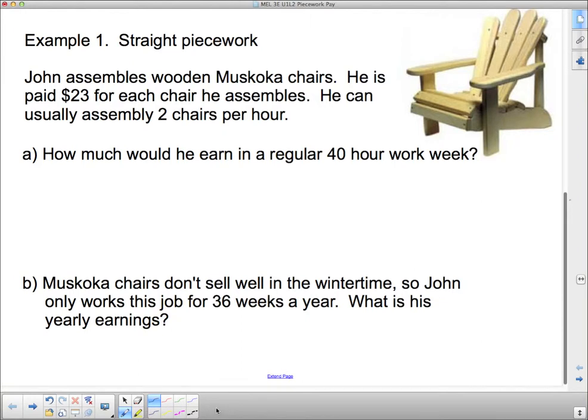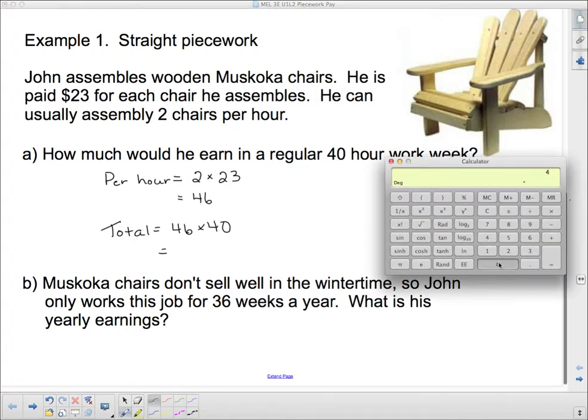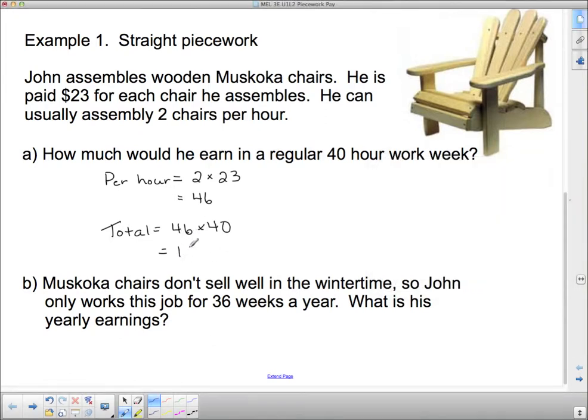He's assembling two chairs per hour and he's working for 40 hours. Per hour, he assembles two chairs and each chair earns him $23. So for one hour he earns $46, which is pretty good. Then he's working for 40 hours, so total is 46 times 40. And 46 times 40 is $1,840. That's pretty good pay.